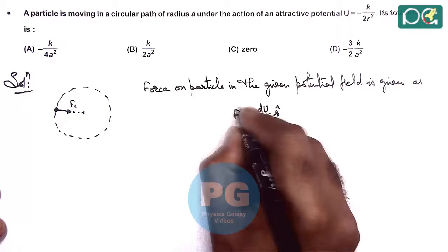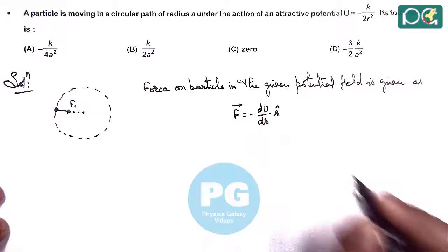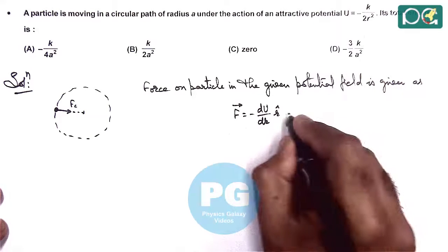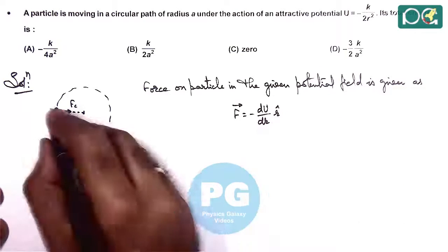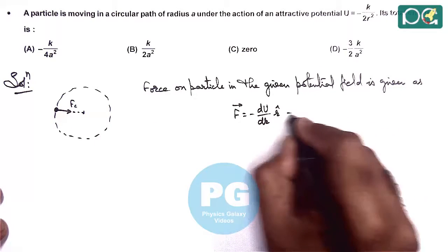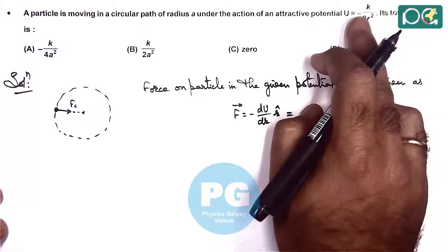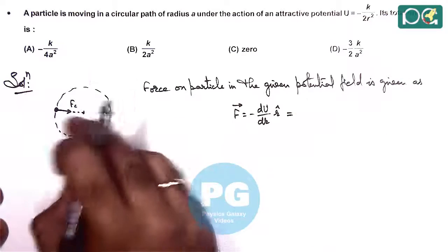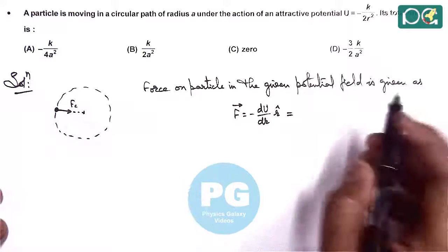This can be written with R̂ as well. R̂ is the vector acting toward the center. Since the potential energy is negative, the force is attractive and directed toward the center.